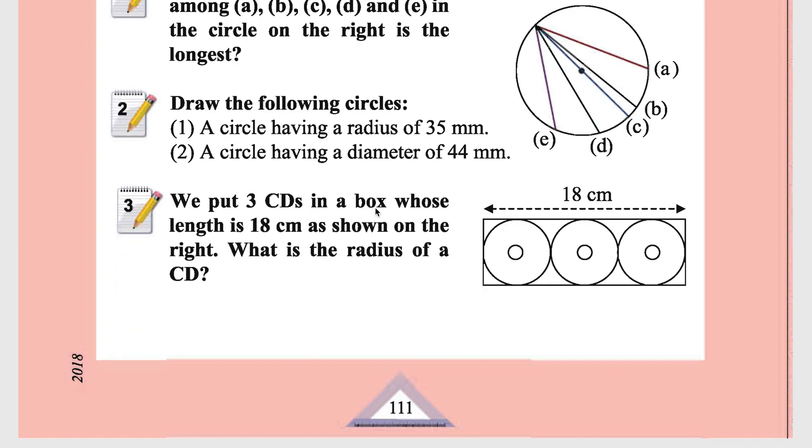If we put three CDs in a box whose length is 18 cm as shown on the right, what is the radius of a CD? Diameter will be 18 by 3, which is 6 cm. Radius will be 6 by 2, which is 3 cm.